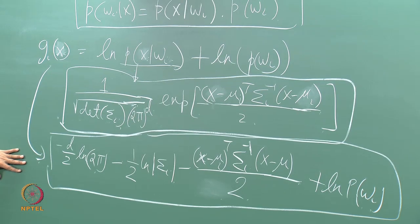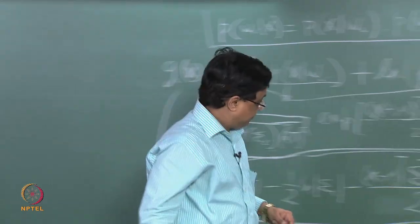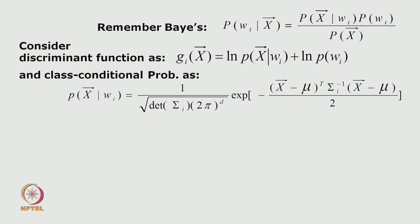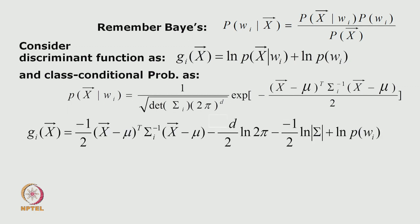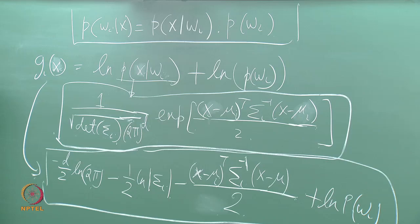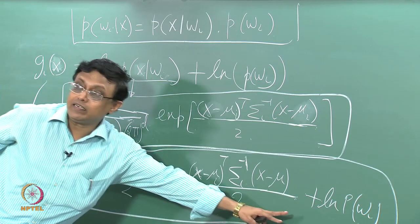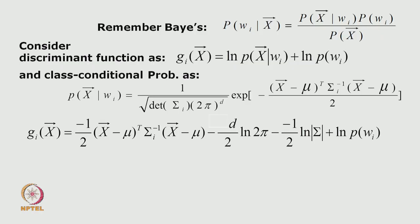Looking back at the slide, the expression we derived on the board matches what is given there. The only difference is that in the slide the covariance term is brought to the beginning; the rest of the expression is essentially the same, just organized slightly differently.